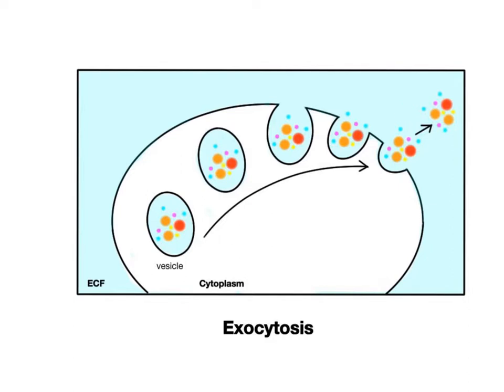There are many examples of exocytosis in cells. Secretory cells produce secretory vesicles that release chemical secretions such as hormones, mucus, or digestive enzymes out of cells and into the ECF, ducts, or organ lumens. Nerve cells also carry out exocytosis when they release neurotransmitters, chemicals used to communicate information between nerve cells. Some cells also release their wastes through exocytosis.